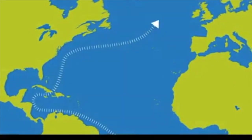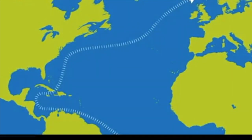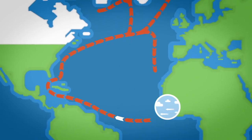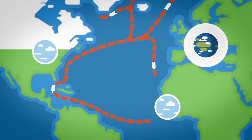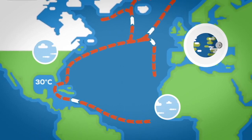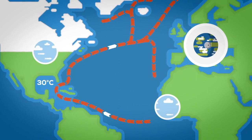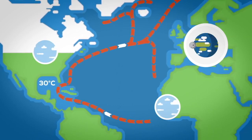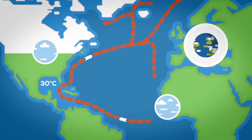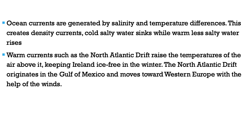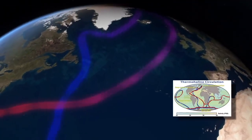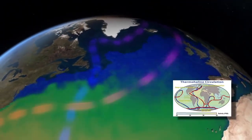Warm currents such as the North Atlantic Drift raise the temperatures of the air above them. The temperatures within the oceans influence the temperatures of the air above. The North Atlantic Drift originates in the Gulf of Mexico, moves toward Western Europe, and just off the west coast of Ireland this warm current heats the air above it and keeps Ireland ice-free in winter. With the help of the winds, it not only keeps temperatures warmer but also brings increased rainfall, because cold air meeting the warm air causes the warm air to rise, leading to condensation and precipitation.